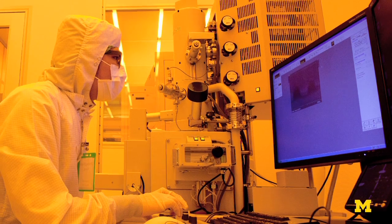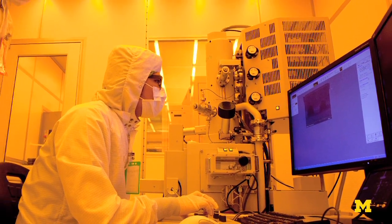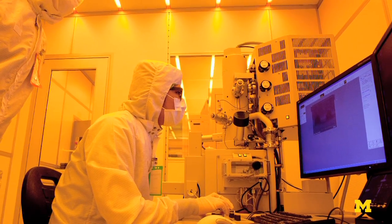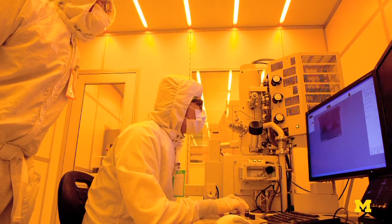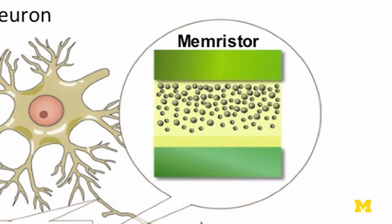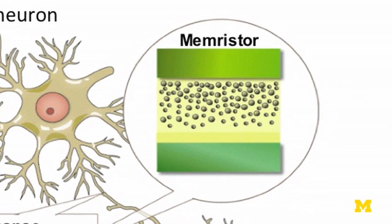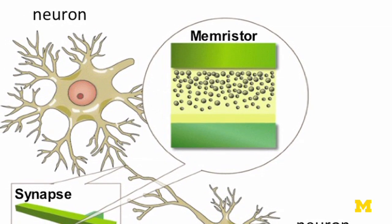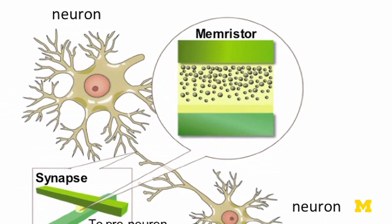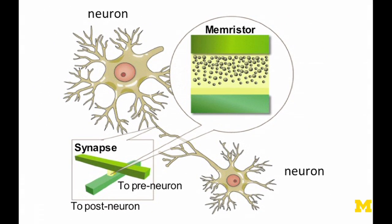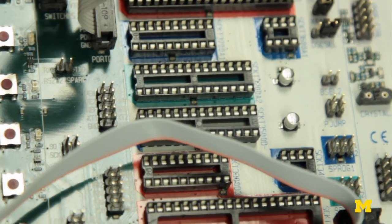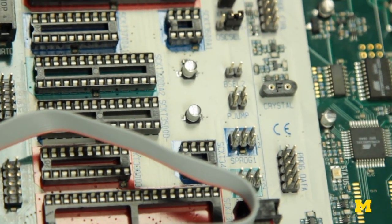To enable this kind of connection we're using nanoscale devices. We developed a new type of device structure. These devices are so-called two-terminal resistive switches, or some people call them memristors. A memristor is basically a resistor with memory — a very simple structure that can be used to connect a large number of processing units.